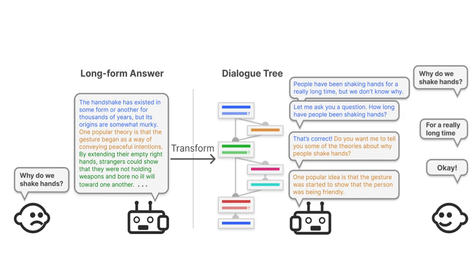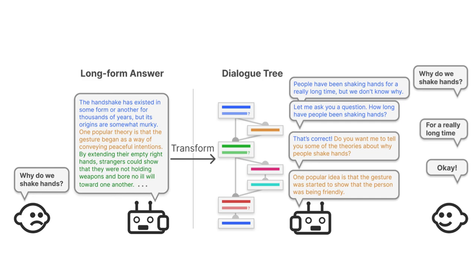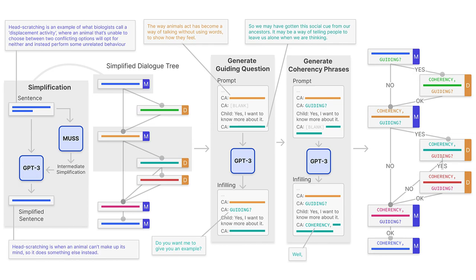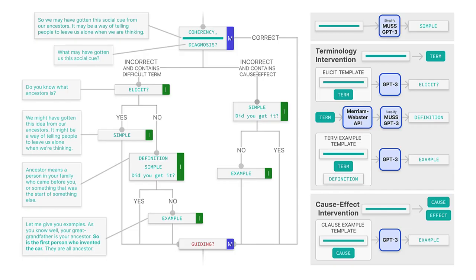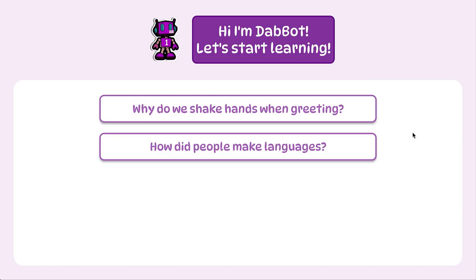In this work, we propose design guidelines for creating interactive dialogues that promote children's engagement and help them understand answers to their questions. Applying these guidelines, we devised an AI-based pipeline that automatically transforms existing long-form answers into interactive dialogues.